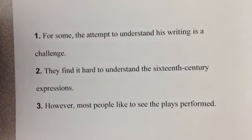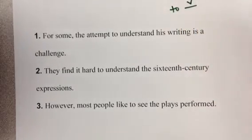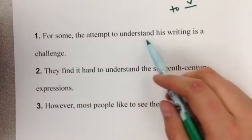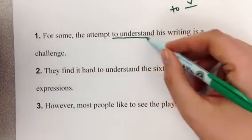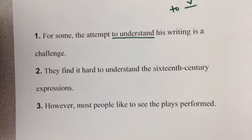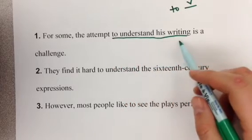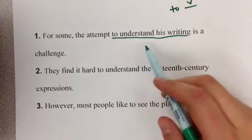Let's try to find the infinitives and the infinitive phrases in these sentences. So what we're looking for, again, is to verb. This is the infinitive. For some, the attempt to understand his writing is a challenge. So here is our infinitive, to understand. But to get the whole phrase, we have to get any objects, complements that this may have, or modifiers. So here we have his writings. To understand his writing. The writing is the direct object of understand. It's the thing that is understood. So it's included in this phrase.